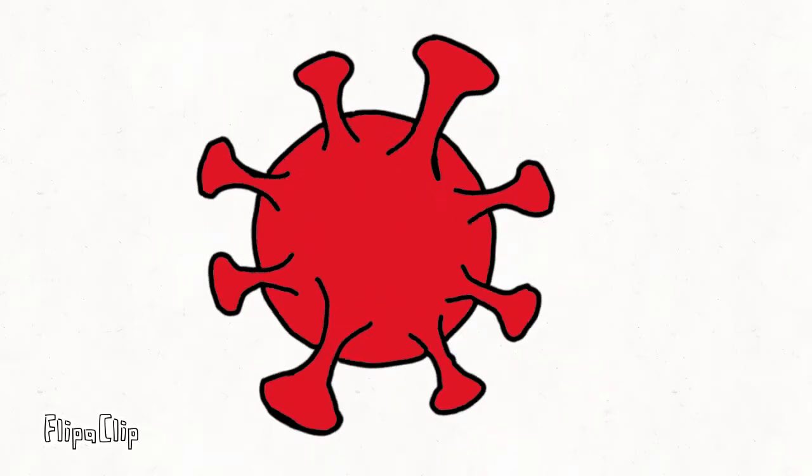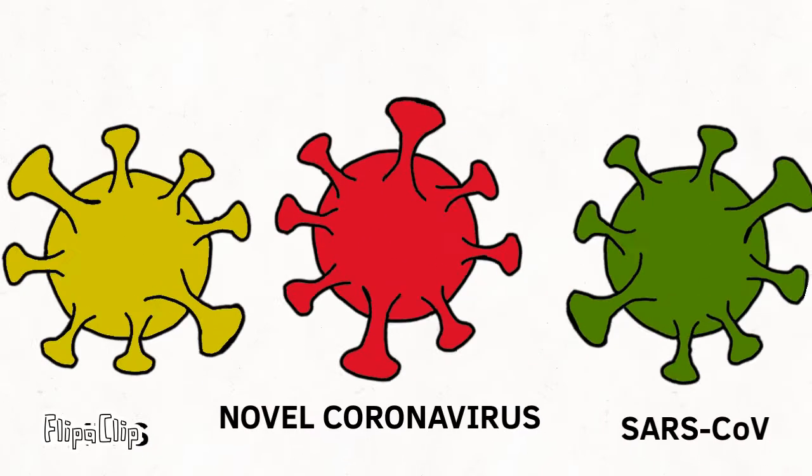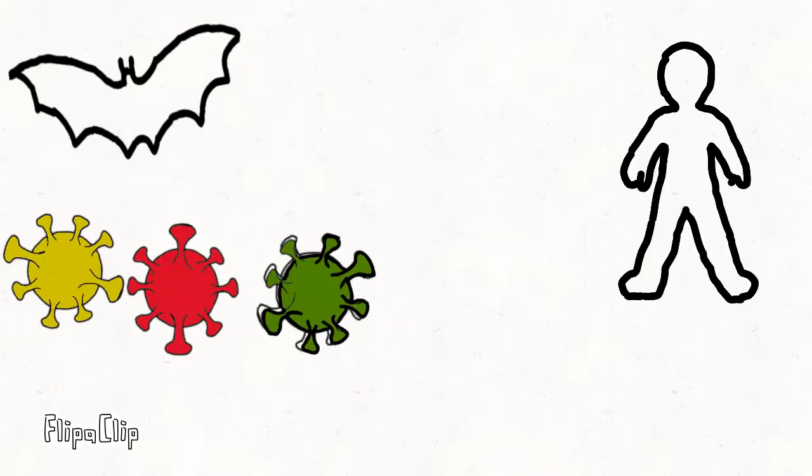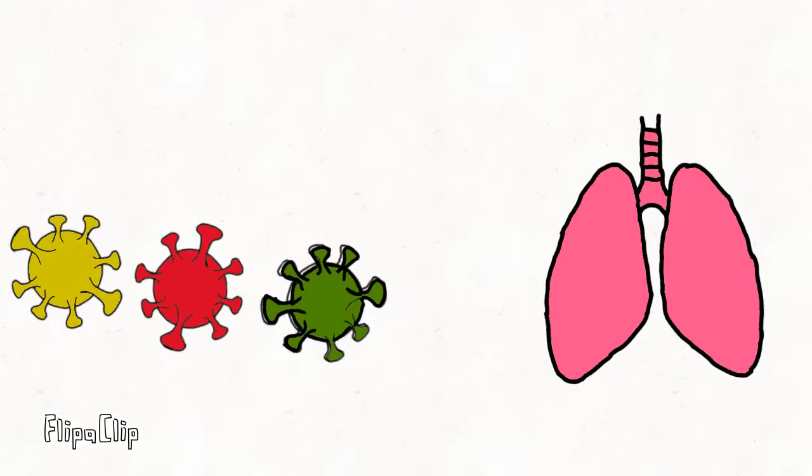I'm a coronavirus. You might have known my family members, SARS-CoV and MERS. We are known as a zoonotic virus because we all came from animals and affect humans. We also cause respiratory problems. Enough about them.